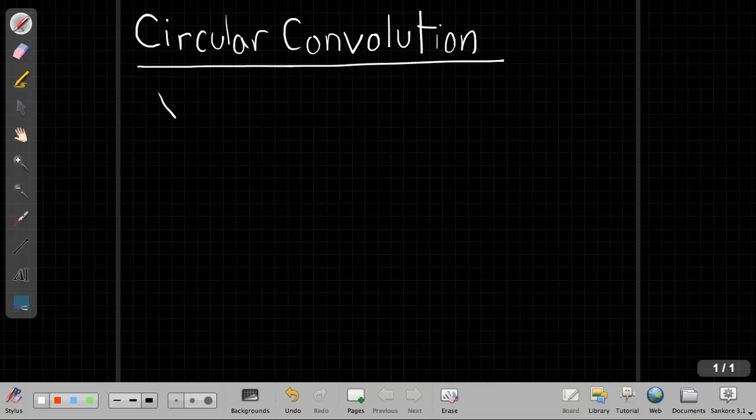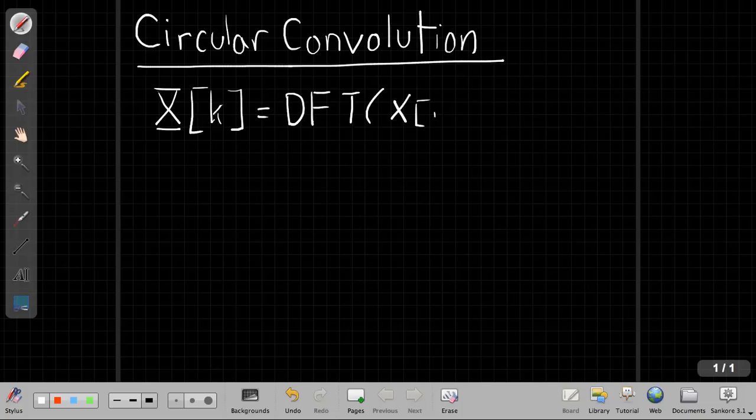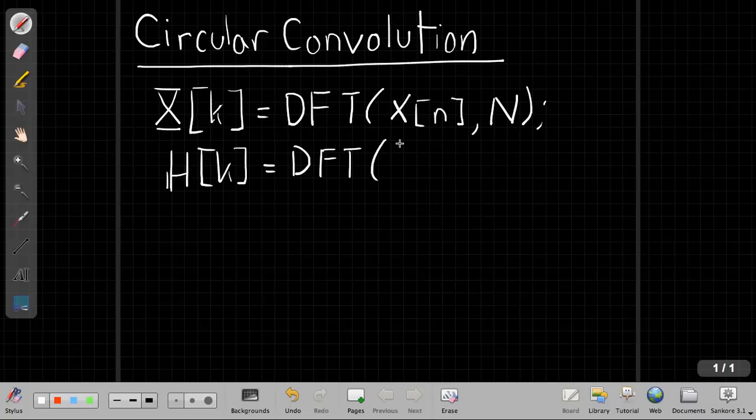So to spell that out more carefully, suppose we say that X[k] is the discrete Fourier transform, abbreviated as DFT, of some finite length time sequence x[n]. And we do that with some DFT size N - this is the number of samples we've taken in frequency. We do the same thing for our filter, H[k] is the DFT of our impulse response h[n] with the same DFT size. It's very important.